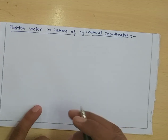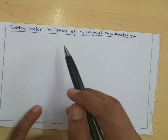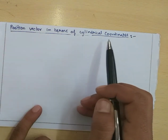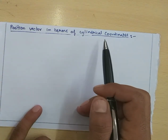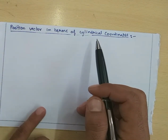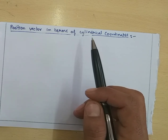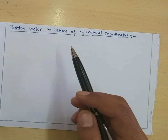Welcome dear students. Today we will talk about position vector in terms of cylindrical coordinates. Then we will find out velocity, and then we will find acceleration.